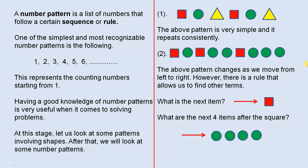One of the simplest and most recognizable number patterns is the following: 1, 2, 3, 4, 5, 6 and so on. This represents the counting numbers starting from 1.